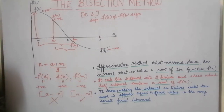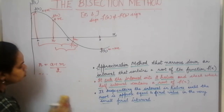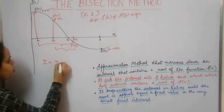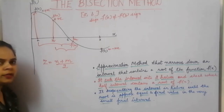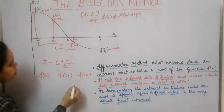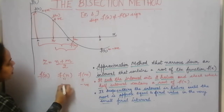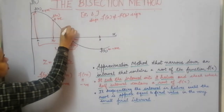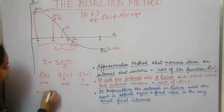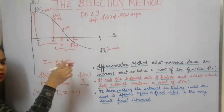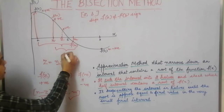The interval in consideration is now [n, m]. We keep narrowing by choosing a point z as the midpoint of n and m, so z equals (n + m) / 2. We calculate f(z), f(n), and f(m). f(m) is negative, f(n) is positive, and f(z) is also positive. The [n, z] interval has both positive signs, so it is discarded. Since [z, m] has opposite signs, the interval in consideration becomes [z, m].